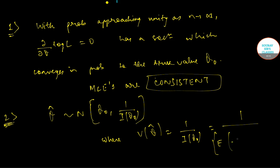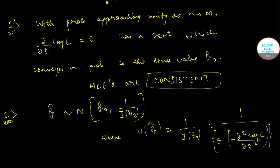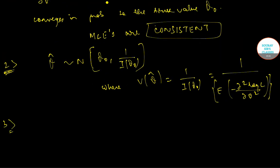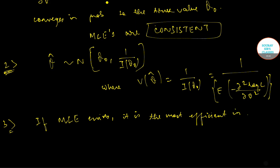Here I(theta_0) is the Fisher information, given by the expectation of minus the second derivative of log L with respect to theta. Another result is: if the MLE exists, it is the most efficient in the class of MLEs.